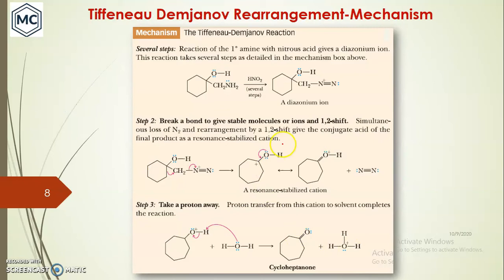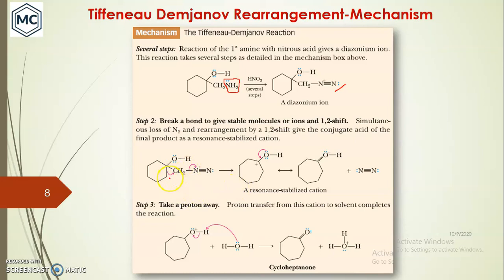For the mechanism of the Schiemann-Demjanov rearrangement: the first step is the formation of the diazo compound by diazotization — the mechanism is the same as discussed for the Demjanov rearrangement. In the beta-amino alcohol, the amine group gets diazotized with nitrous acid to form a diazonium ion (C≡N⁺). Next, the diazonium ion is removed — loss of nitrogen occurs — and a 1,2-shift rearrangement takes place to give the conjugate acid of the final product, with ring expansion.